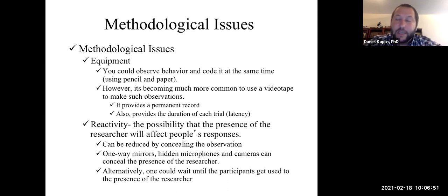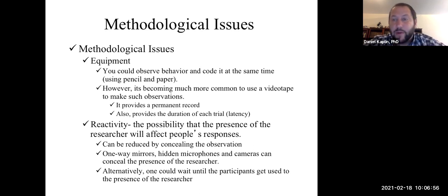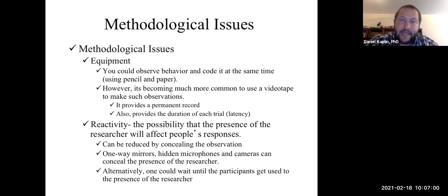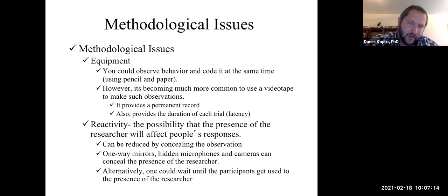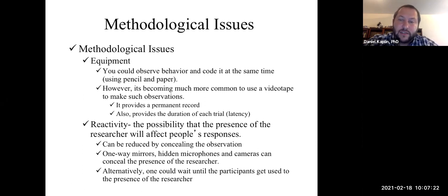You want to ideally utilize equipment that you can afford. The cheapest coding strategies or equipment you could use are paper and pencil. However, it's becoming more common that people video record the observation so they have a permanent record they can go back to. You can also get other data points you wouldn't be able to get in real time, such as the duration of a trial.